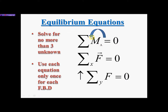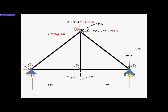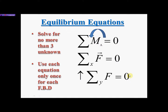The sign convention for moment is always counterclockwise positive. For summation of forces in the x direction, forces acting to the right are positive, equal to zero. For summation of forces in the y direction, forces acting up are positive, equal to zero. Because we have three equilibrium equations, we can solve for three unknowns. We have exactly three unknowns, so we are in good shape — we don't need different techniques. Each equation can only be used once per FBD.